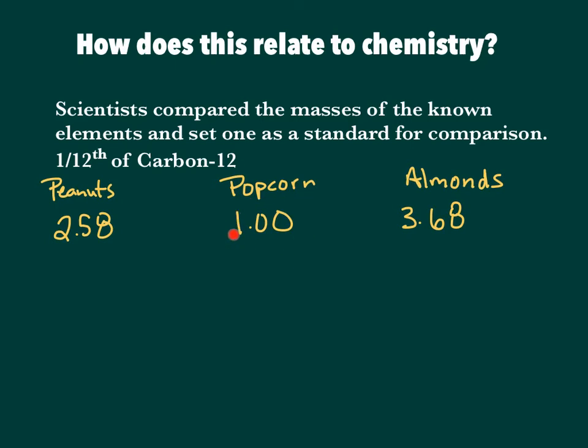If we picked this popcorn, which had a relative mass of 1, and we said, let's let that represent carbon, which has a mass of 12. Then we could find out, what would the peanuts represent? Well, if 1 is 12, then 2.58 is 2.58 times greater than that 12. And so we could multiply those, and we get 30.96.